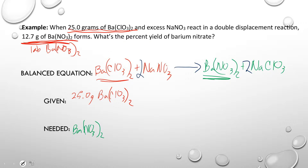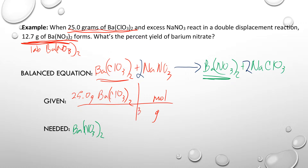First, we turn grams into moles using the periodic table. Barium is about 137, chlorine is 35.5 and there are two of those, and oxygen is 16 with three times two — or six oxygens. Adding all that up gives us 304.2 grams per one mole of Ba(ClO3)2.